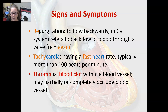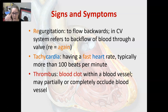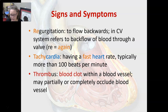Regurgitation means to flow backwards. In the cardiovascular system, it refers to the backflow of blood through a valve. For example, with AV valve regurgitation, when the ventricle contracts, blood flows back into the atria instead of going out into the artery. Tachycardia means having a fast heart rate, typically more than 100 beats per minute. A thrombus is a blood clot within a blood vessel that may partially or completely occlude it. These are all the signs and symptoms, and we'll cover heart pathologies in the next video.